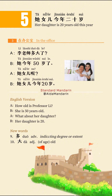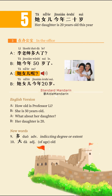Text three: 李老师多大了? — How old is Professor Lee? 她今年五十岁了 — She is fifty years old. 她女儿呢? — What about her daughter? 她女儿今年二十岁 — Her daughter is twenty.